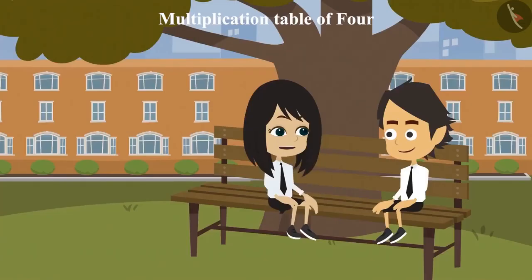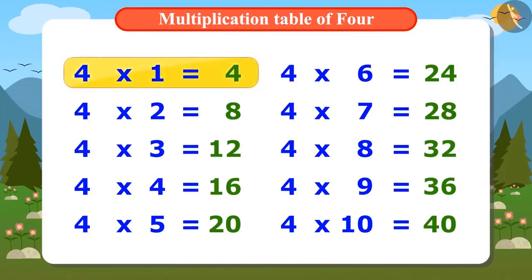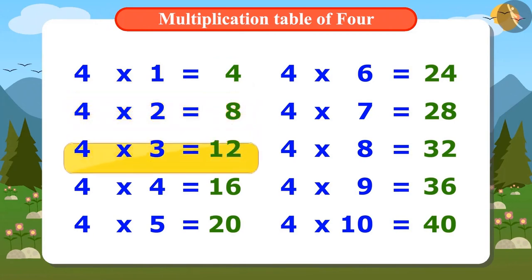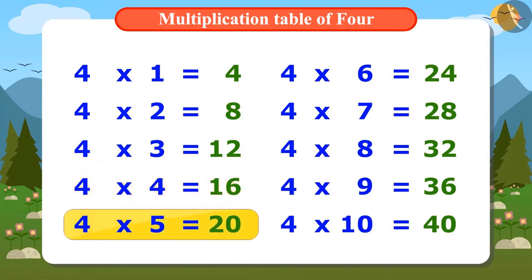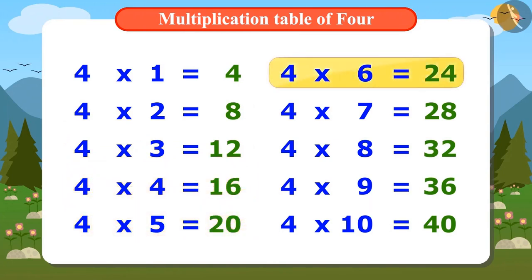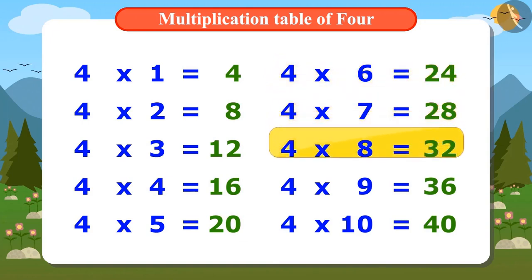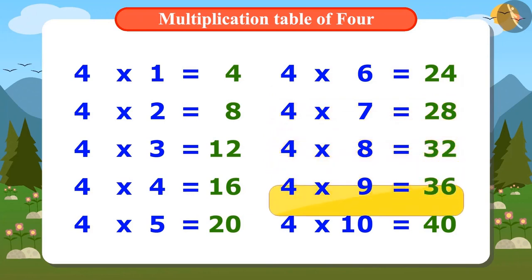Now let's memorize this multiplication table of 4 in the sing-song manner: 4 ones are 4, 4 twos are 8, 4 threes are 12, 4 fours are 16, 4 fives are 20, 4 sixes are 24, 4 sevens are 28, 4 eights are 32, 4 nines are 36, 4 tens are 40.